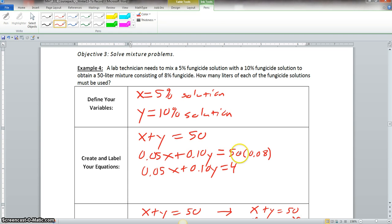Now that's equal to, now we want 50 liters, but we want that 50 liters to equal the 8% fungicide. So it'll be 50 times 0.08. So that equation becomes 0.05x plus 0.10y equals 4.